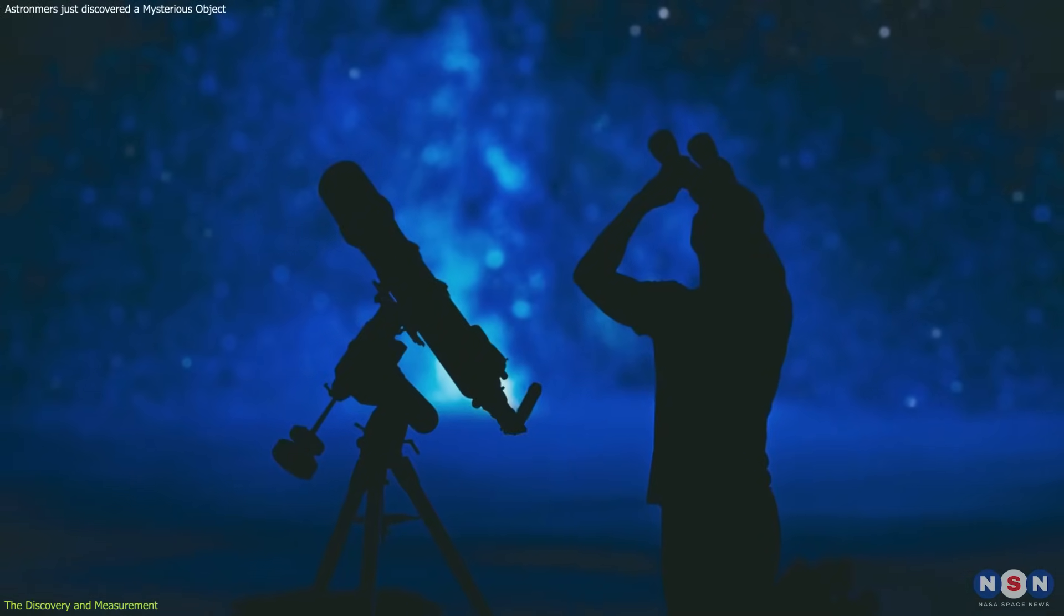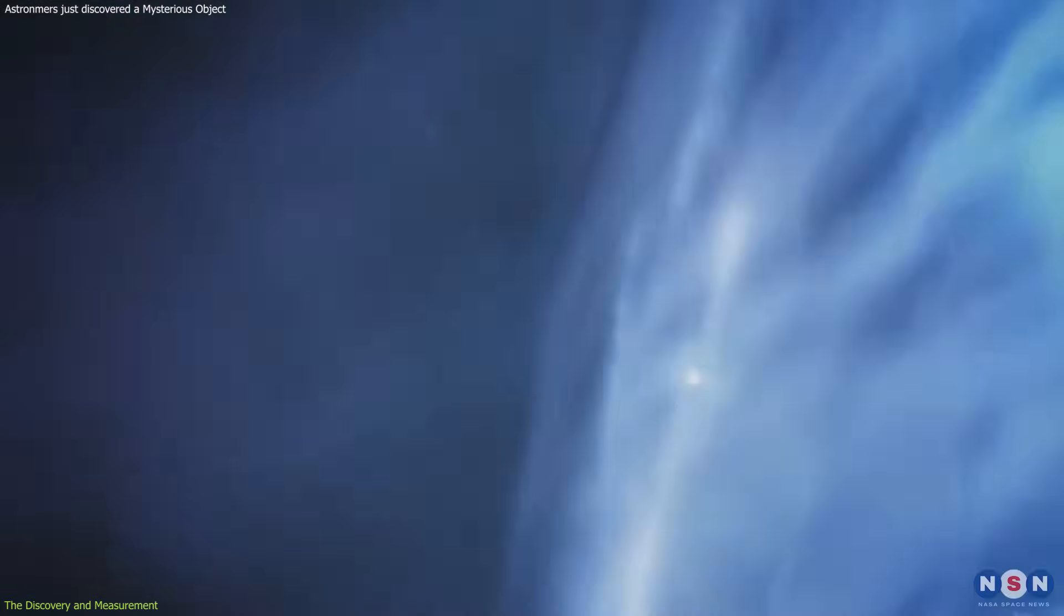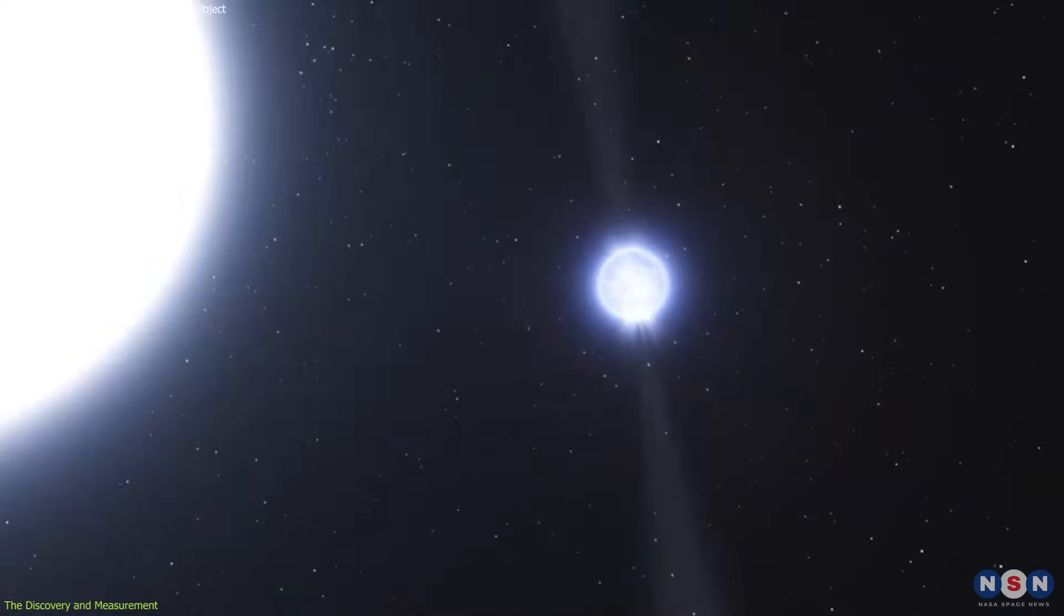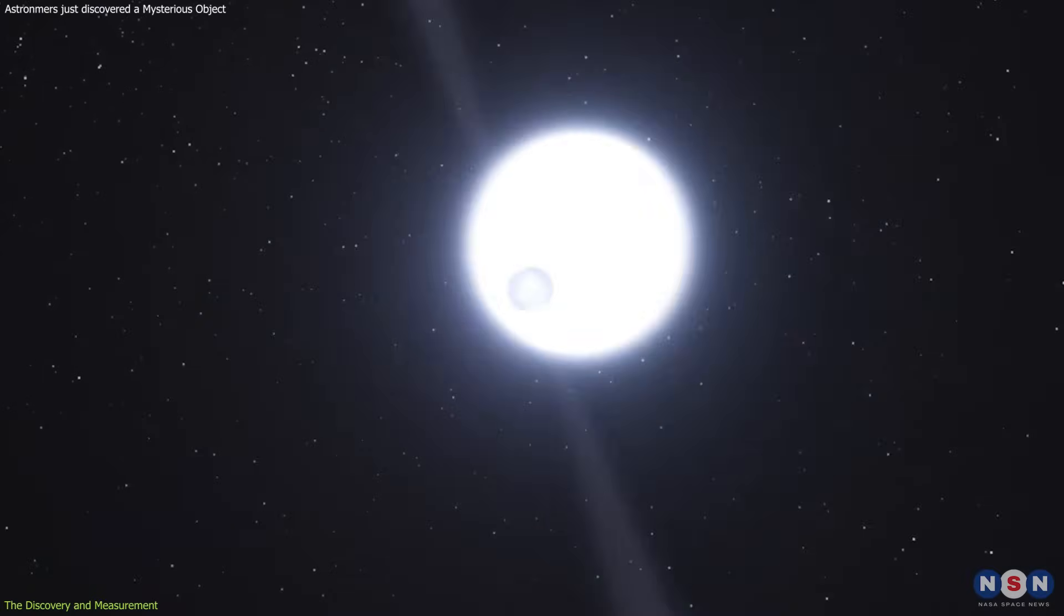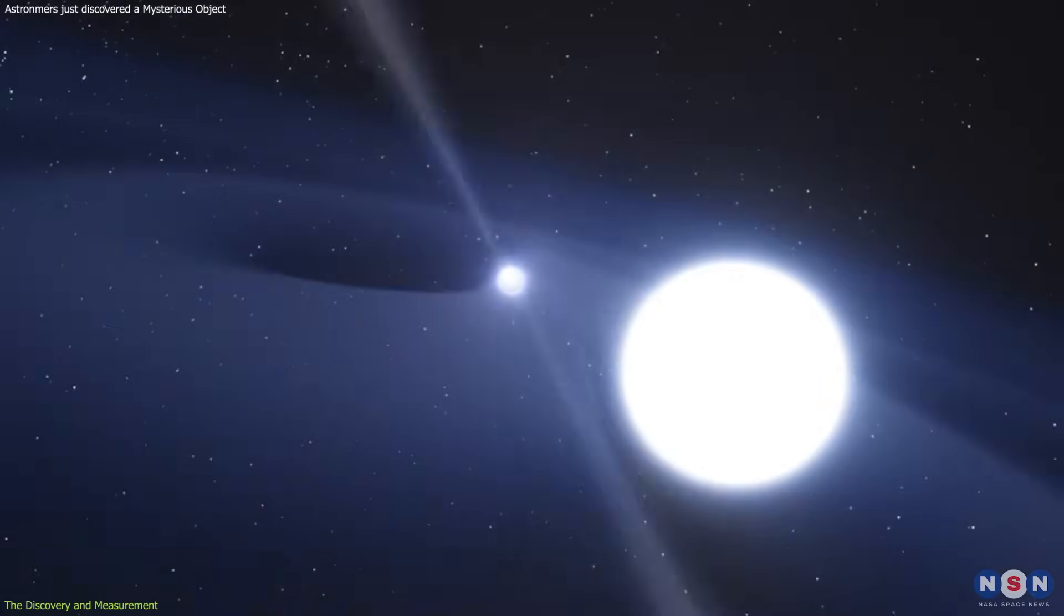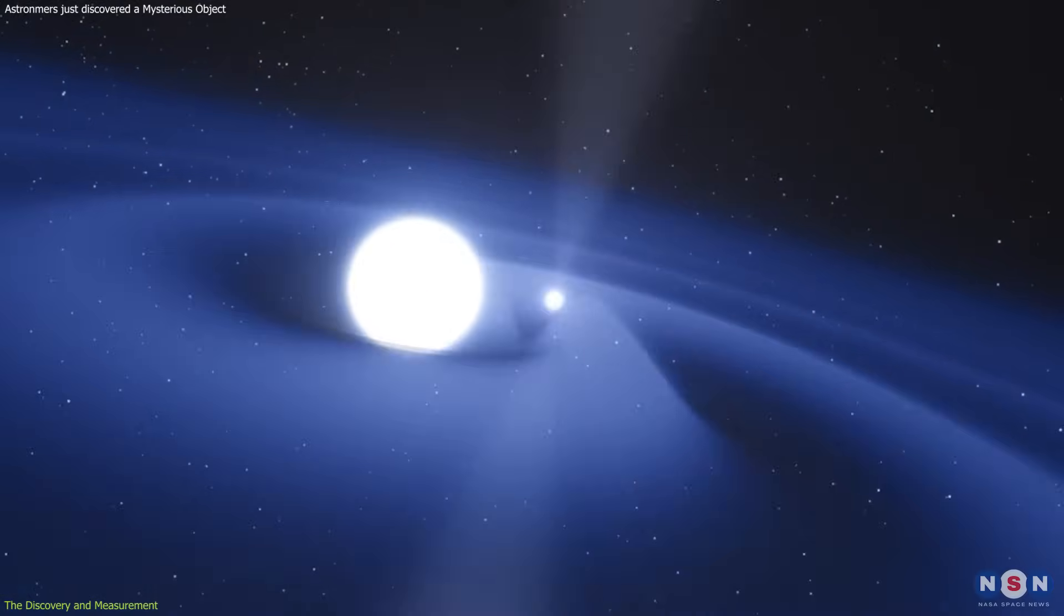This companion object is invisible to our eyes, but it affects the pulsar's radio signals. By carefully analyzing the timing and frequency of the pulses, the astronomers were able to measure the orbital parameters and the mass of the companion object. And this is where things get interesting.